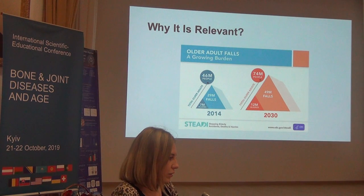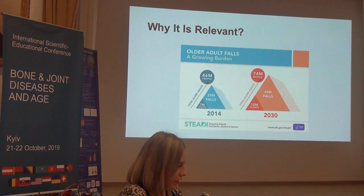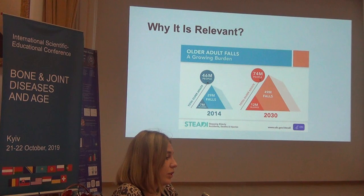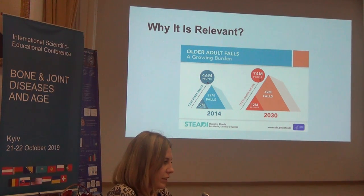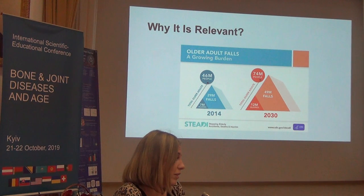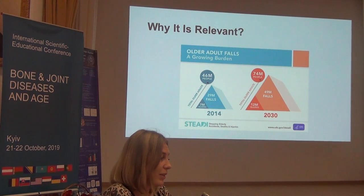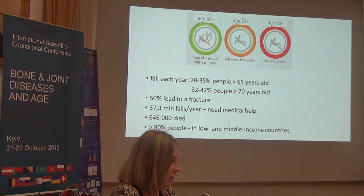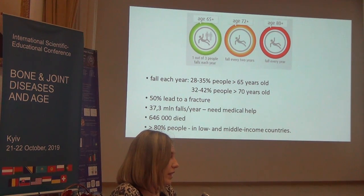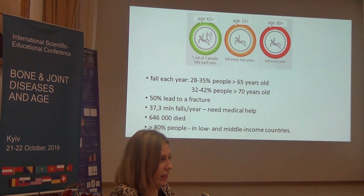According to the Center for Stopping Elderly Diseases and Injuries in the USA, up to 2030, the amount of people over 65 years old will increase by 38%. The amount of falls and injuries will increase respectively. 30% of people over 65 years old fall every year, and 42% of people over 70 years old fall every two years. Practically every person under 18 years old falls every year.